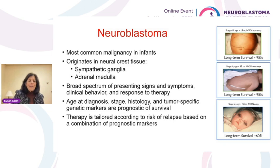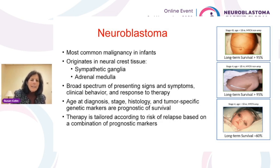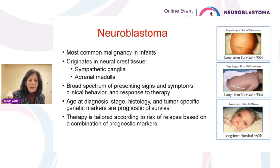Neuroblastoma is a common malignancy in infants and young children. It originates in neural crest tissues, typically along the spinal canal and the sympathetic ganglia, or within the adrenal medulla, which is an organ that sits on top of the kidney. It has a broad spectrum of presenting signs and symptoms, and clinical behavior and response is quite diverse. Age of diagnosis, stage, histology, and tumor-specific genetic markers are prognostic of survival, and treatment is tailored according to risk of relapse.